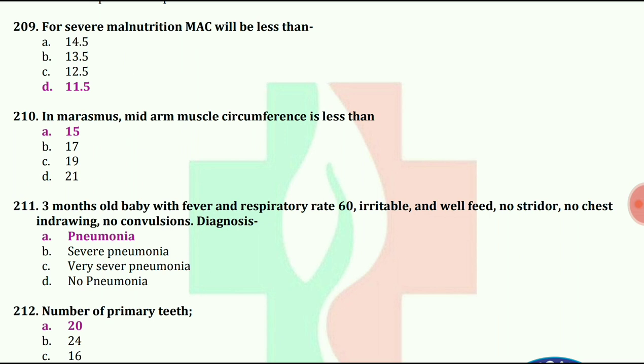3-month-old baby with fever, respiratory rate 60, irritable and well-fed, no stridor, no chest indrawing, no convulsions. What's the diagnosis? The answer is pneumonia.